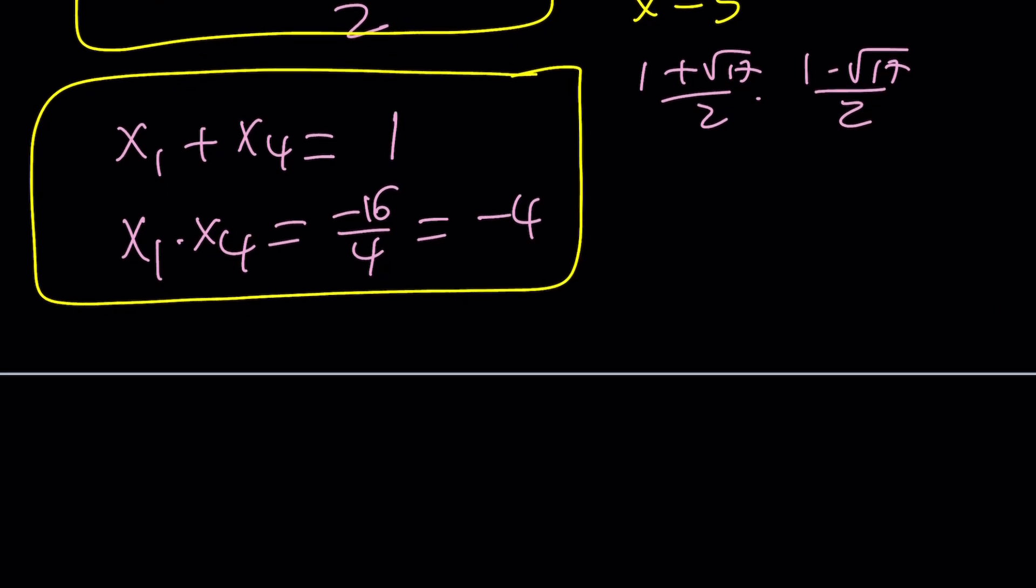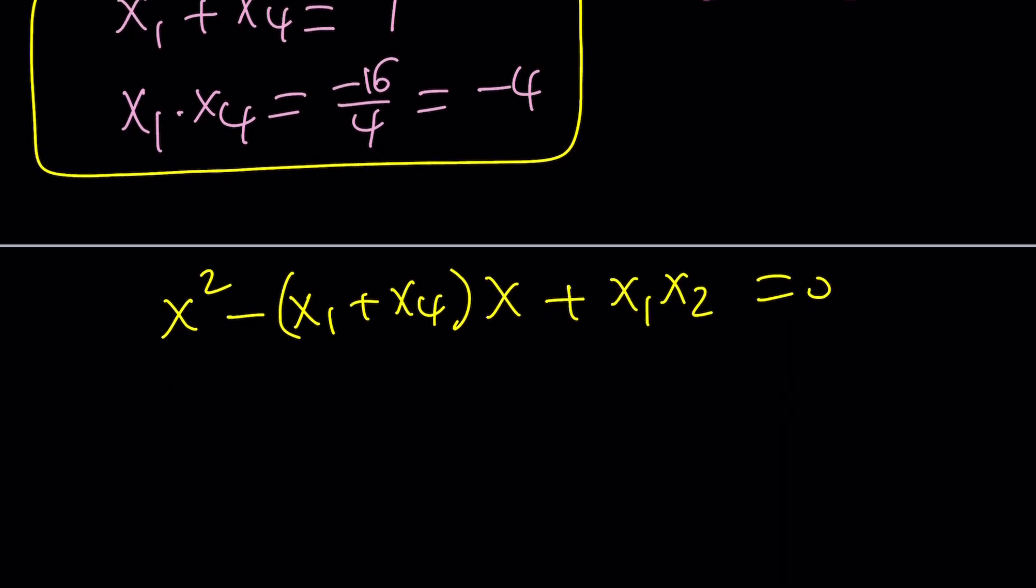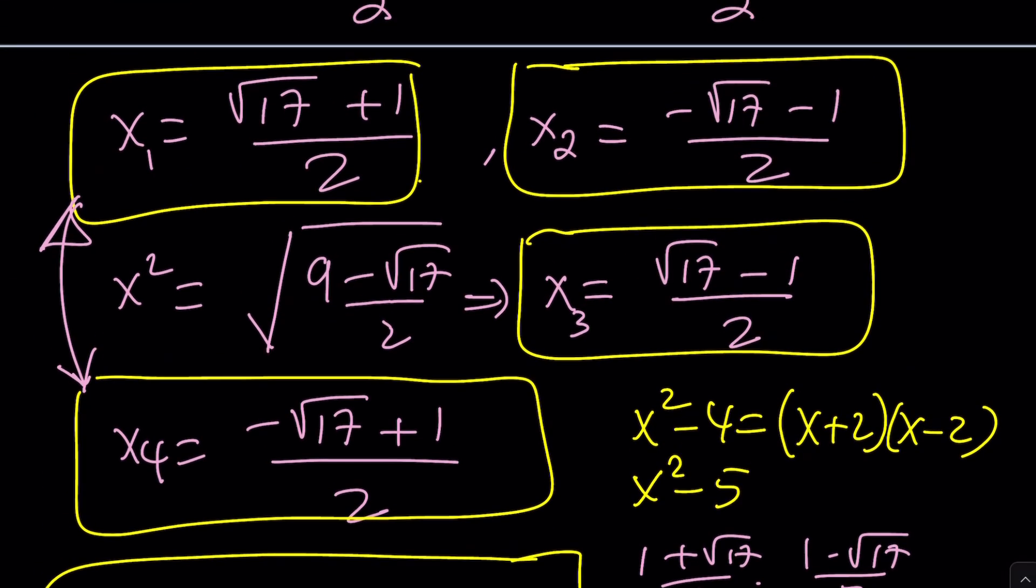What is the equation whose roots have this relationship? And you can write it as follows. x squared minus x1 plus x4 times x from Vieta's formulas plus x1 times x2 equals 0. So, your solution or your equation is going to be x squared minus x minus 4 equals 0. So, that's one of the factors.